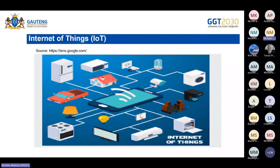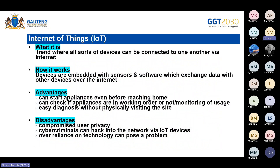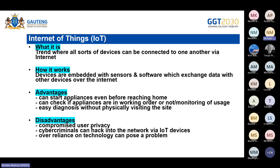Let's move to the next concept: Internet of Things. Looking at the picture, you can already see the connection between all those devices. The Internet is necessary for this to happen. Internet of Things is a trend where all sorts of devices can be connected to one another via the Internet — 'via the Internet' is the key phrase. Devices are embedded with sensors and software which exchange data with other devices over the Internet.